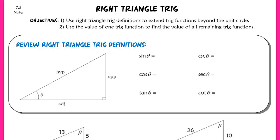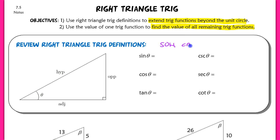This lesson is for section 7.5, right triangle trig. Today we'll use right triangle trig definitions to actually extend our trig functions beyond just our unit circle. Then we're going to use the value of one trig function to find the value of all remaining trig functions. We're going to begin by reviewing right triangle trig definitions. You guys used a mnemonic when you were learning in geometry, a little bit of right triangle trig.